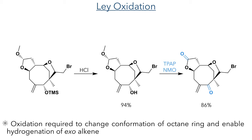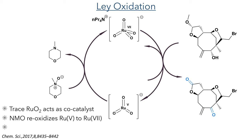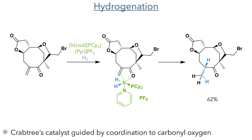To change this conformation, they first deprotected the TMS group, and then oxidized both the hydroxyl group and the acetal using a Ley oxidation. The Ley oxidation uses TPAP (tetrapropyl ammonium perruthenate), which oxidizes the molecule and is reduced to ruthenium trioxide. This is re-oxidized back to ruthenium(VII) by NMO, and the reaction can continue. Detailed studies show there is also a ruthenium(VI) species which can serve as an oxidant, generated by disproportionation of the ruthenium(V) species into ruthenium(VI) and ruthenium(IV) oxide. With these oxidations complete, they were then able to accomplish the desired hydrogenation using Crabtree's catalyst, a cationic iridium salt guided by coordination to the carbonyl oxygen. This directs hydrogen to the top face of the alkene, generating the product in a 62% yield as a single isomer.